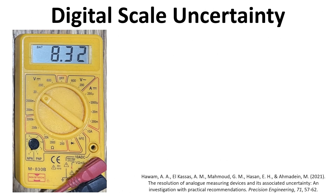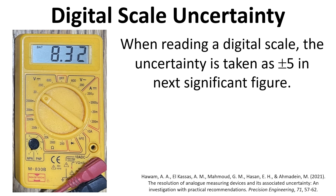When reading a digital scale, we take the uncertainty as plus or minus five in the next significant figure. For example, with a voltmeter reading of 8.32, we have readings in the first and second decimal places but not the third. That third decimal place is the next significant figure, so the uncertainty is plus or minus five in that third decimal place. This assumes that the readings are stable and not fluctuating.